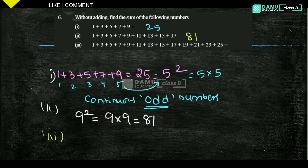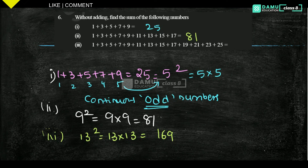For the third one, we already counted up to 9 odd numbers, then continue: 10, 11, 12, 13 — so there are 13 terms in total. That gives 13 squared, which is 13 into 13 = 169. So without actually adding, we calculated 169. Like this, we need to calculate the sum of continuous odd numbers.